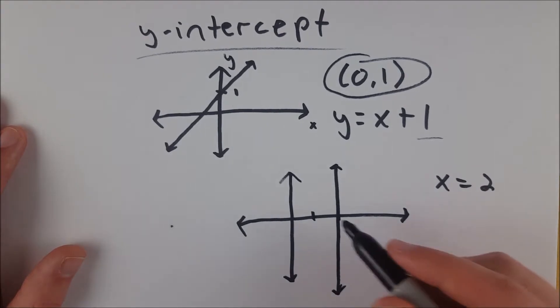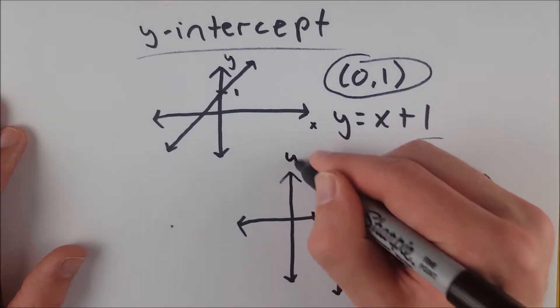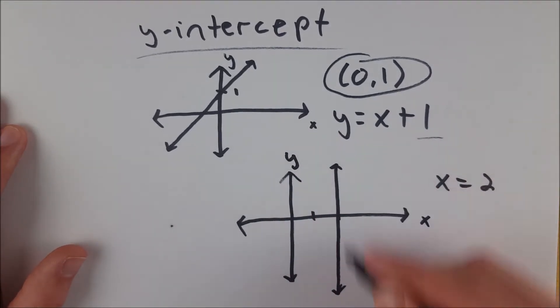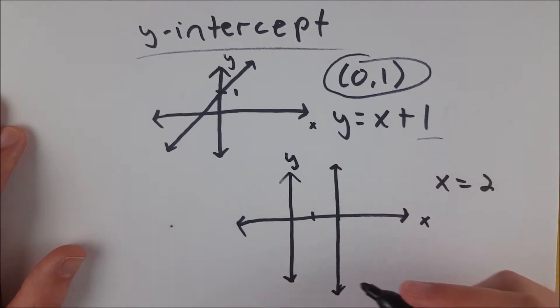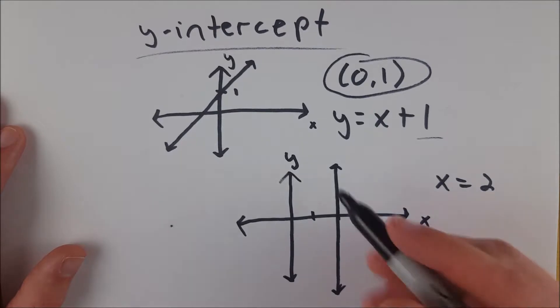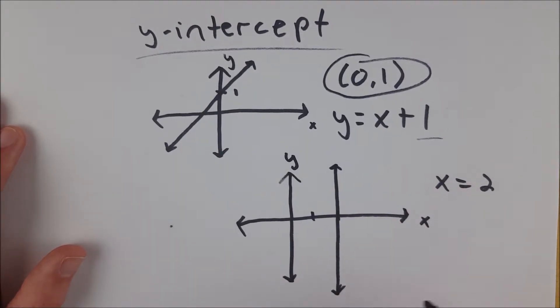This line has no y-intercept because we see this is our y-axis, and this line is never going to intersect the y-axis. It runs parallel to it. So it's never going to intersect it. However, it is also not a function.